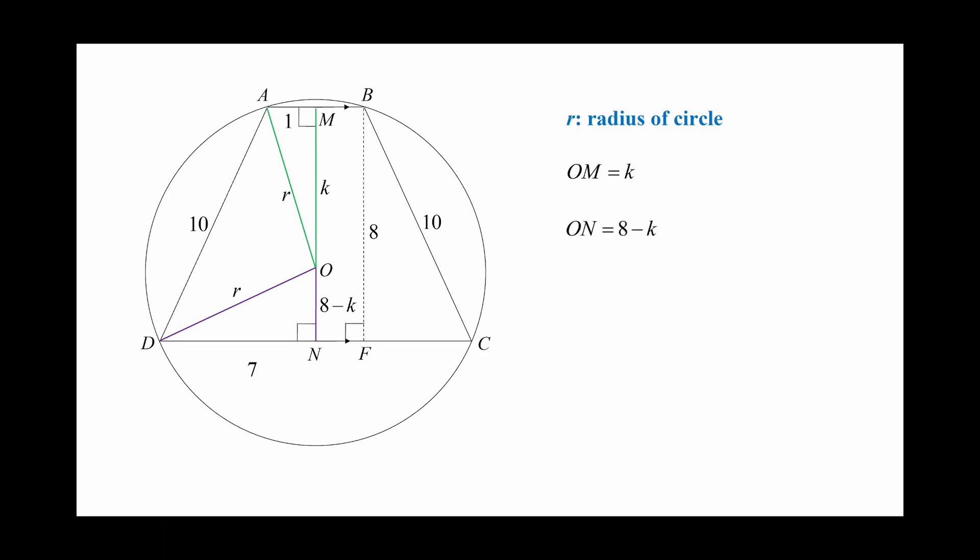Now to solve for the two unknowns R and K, we need to set up two equations. It's not hard because we have two right angled triangles. In the green triangle OAM, K square plus 1 square is equal to R square. We call this equation 1. In the purple triangle ODN, 8 minus K whole square plus 7 square is equal to R square. We call this equation 2.